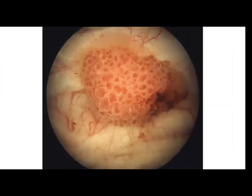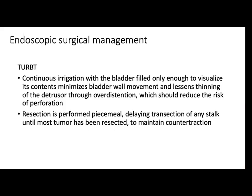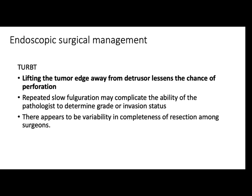This is another example of a cystoscopic finding. Irrigation with bladder filled only enough to visualize its contents minimizes bladder wall movement and lessens staining of the detrusor through overdistension, which should reduce the risk of perforation. Resection is done in a piecemeal pattern with delayed transection of the stalk until most tumor has been resected to maintain countertraction. For friable low-grade tumors, they can often be removed without electrocautery energy. For higher-grade, more solid tumors, a cutting current is required. Repeated slow fulguration may complicate the pathologist's ability to determine grade or invasion status.